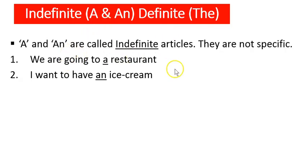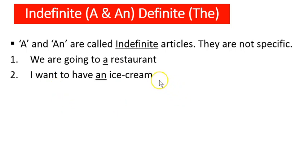A and an are called indefinite articles because they are not specific. For example, 'We are going to a restaurant.' Which restaurant? It is not very specific — any restaurant. Hence it is indefinite. Similarly, 'I want to have an ice cream.' Which ice cream? Not very specific — any ice cream. Hence it is indefinite. That is the reason a and an are called indefinite articles.